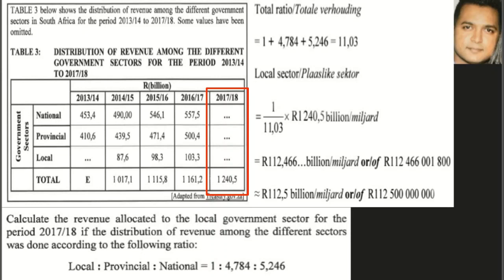The numbers follow the same order as the labels: local is 1, provincial is 4, and the national value follows. As with ratio problems generally, we add the ratios together to get 11.03, then formulate a fraction. For local, since it is assigned 1 in the ratio, we write 1 over 11.03, and multiply by the total. The total of 1240.5 is found in the column indicated by the red square.